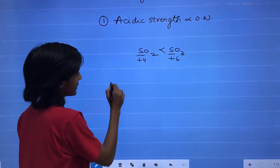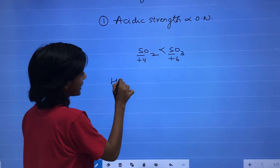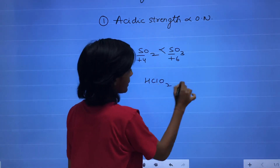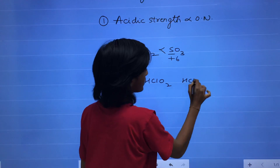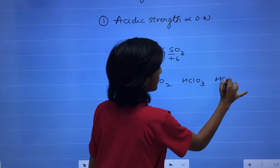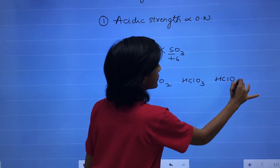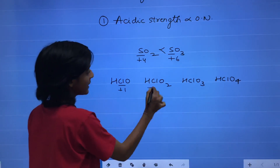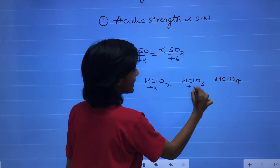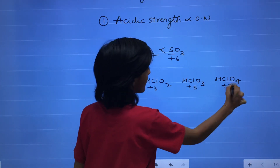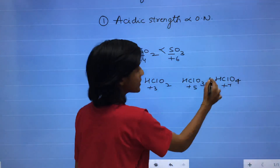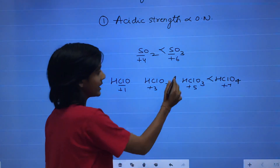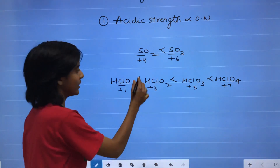In another example, if we compare HClO, HClO2, HClO3, and HClO4, the oxidation state of chlorine is +1, +3, +5, and +7 respectively. So HClO4 is more acidic than HClO3, HClO2, and HClO.